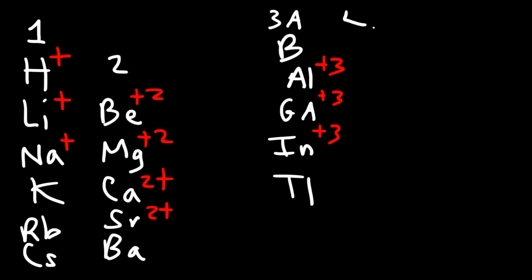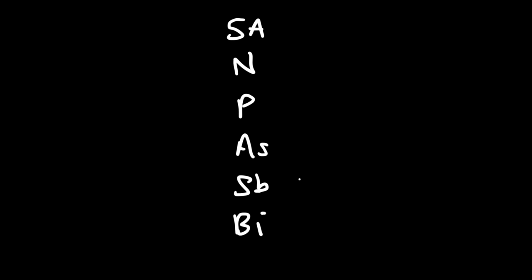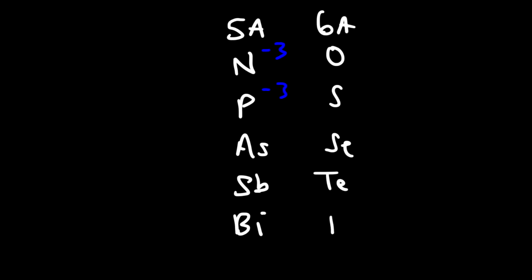Group four contains elements like carbon, silicon, germanium, tin, and lead. Elements like germanium, tin, and lead can form positive two and sometimes positive four charges, so some ions can have multiple oxidation states. To the right of carbon, group 5A or group 15, includes nitrogen, phosphorus, arsenic, antimony, and bismuth — these typically form negative three charges. In group 6A you have oxygen, sulfur, selenium, tellurium, and polonium, which form negative two charges and are known as the chalcogens.